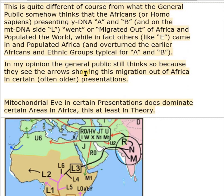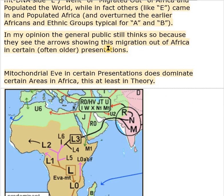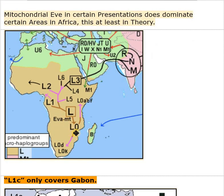In my opinion the general public still thinks so because they see arrows showing migration out of Africa in certain, often older, presentations. In one such presentation, L starts somewhere between L0 and L1, and you find this line and arrow out of Africa and into the world.